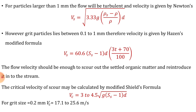The flow velocity should be sufficient to scour out settled organic matter and reintroduce it into the stream. The critical velocity of scour may be calculated by the modified Schiltz formula: Vc = 3 to 4.5 × √(G × (Ss − 1) × D), where the constant ranges from 3 to 4.5. For grit size of 0.2 mm, the critical velocity Vc will be 17.1 to 25.6 cm/s.